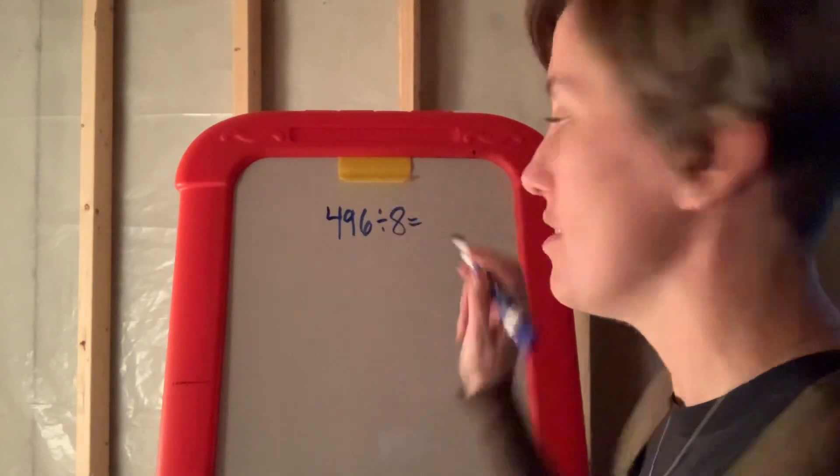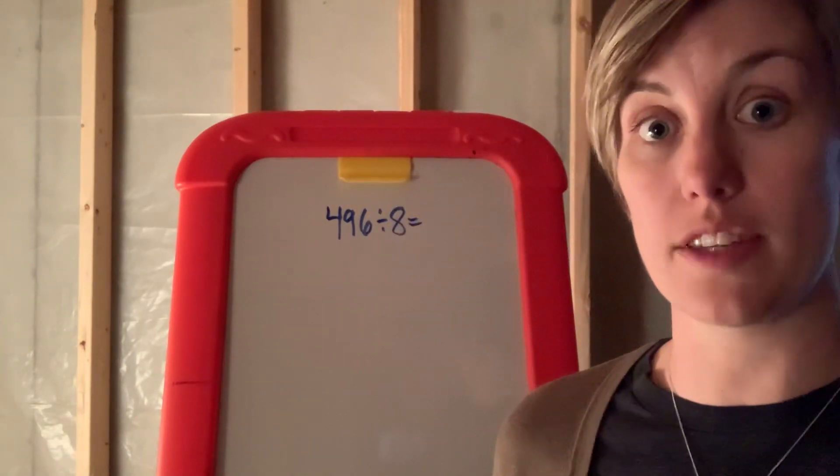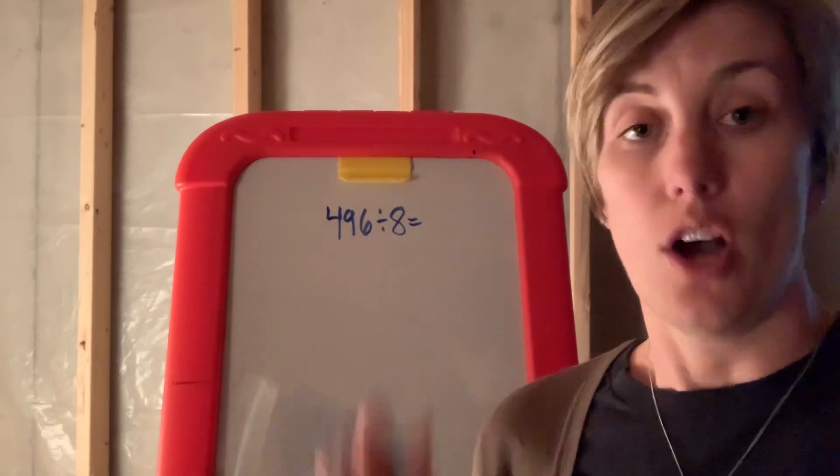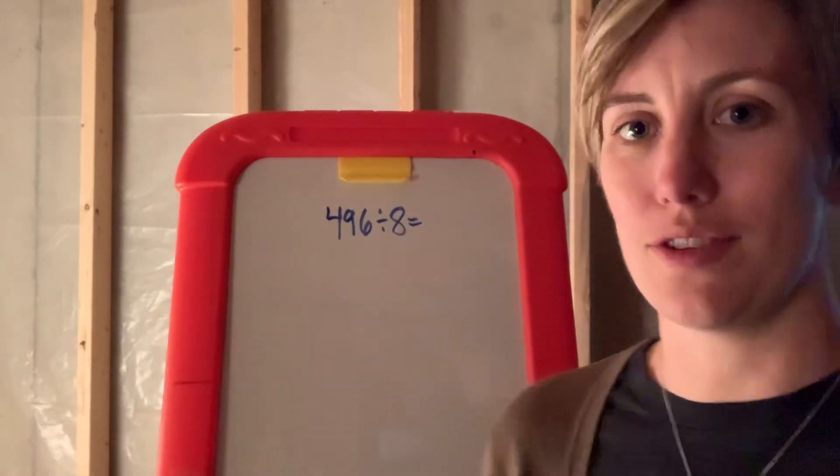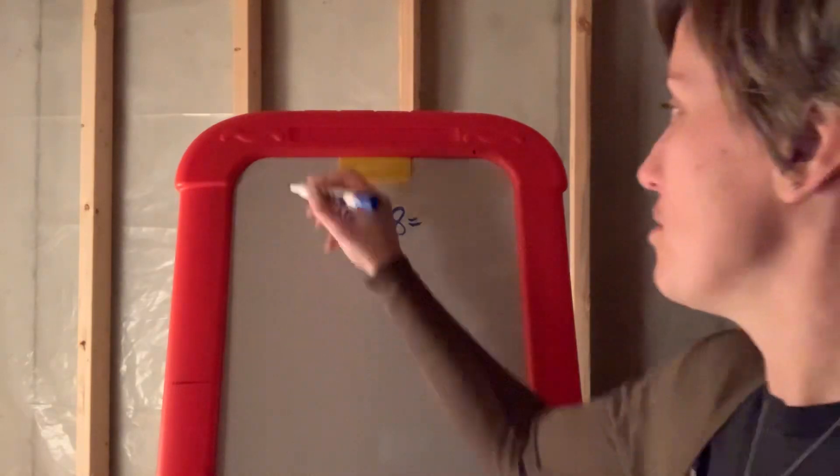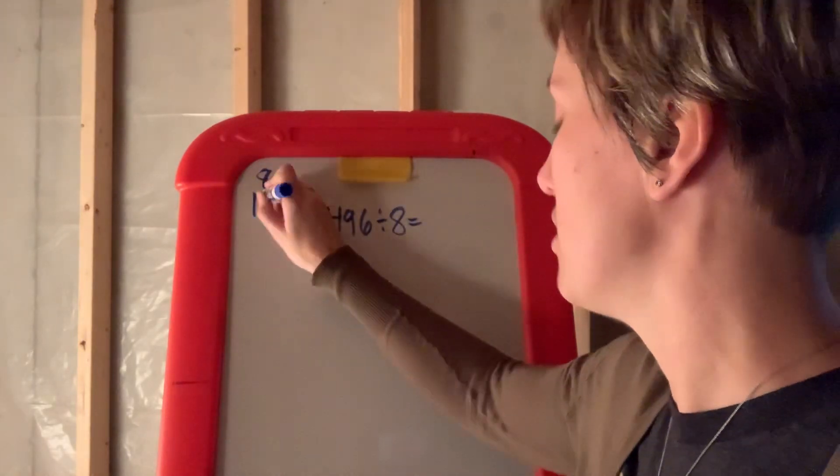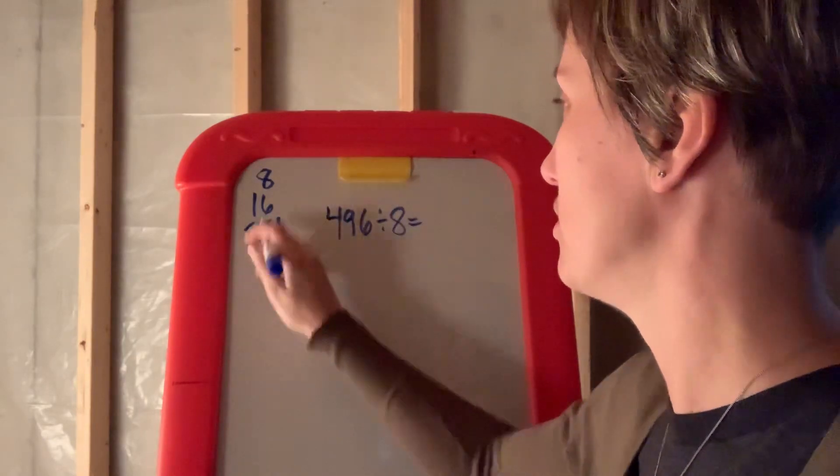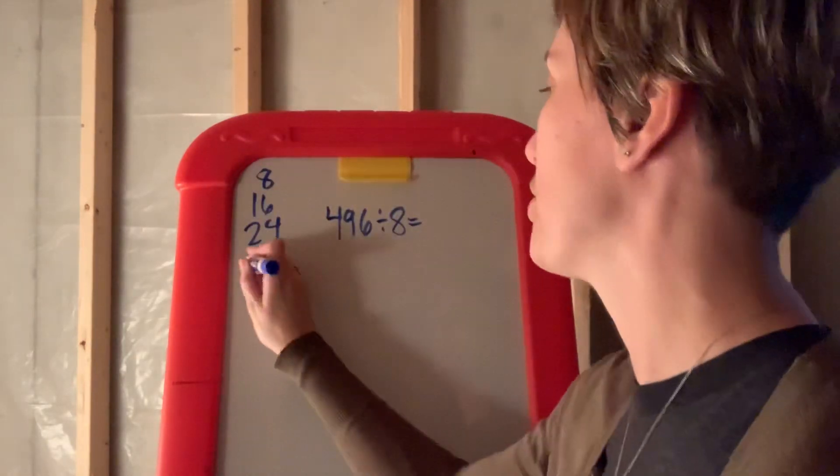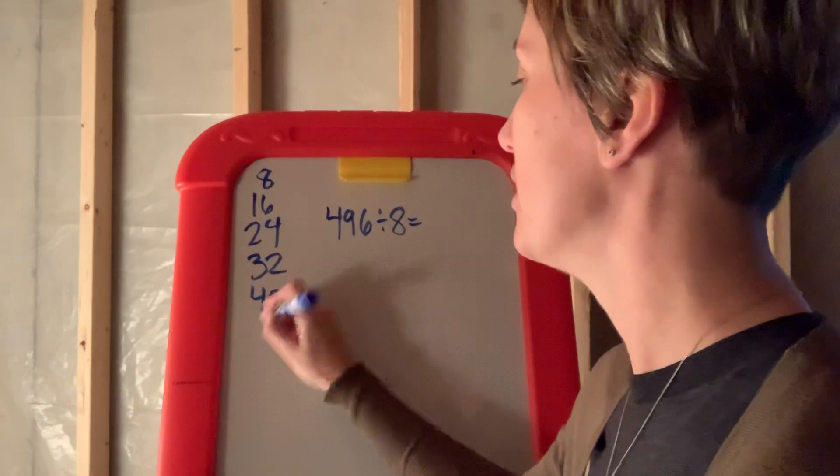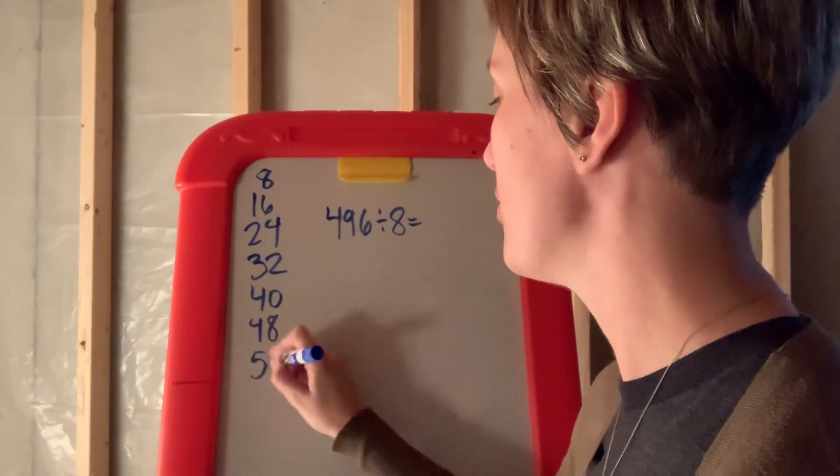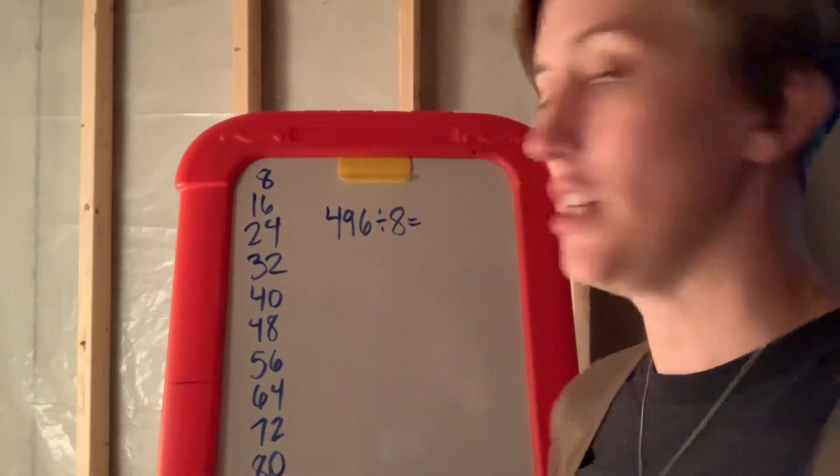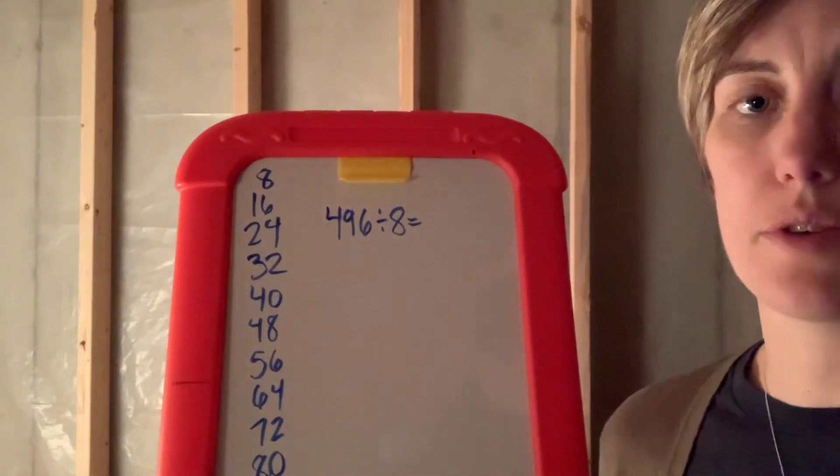496 divided by 8. This is the same problem that I used on my distributed property strategy. So the first thing we do is list our multiples. 8, 16, 24, 32, 40, 48, 56, 64, 72, 80. First thing you need to do is list your multiples.